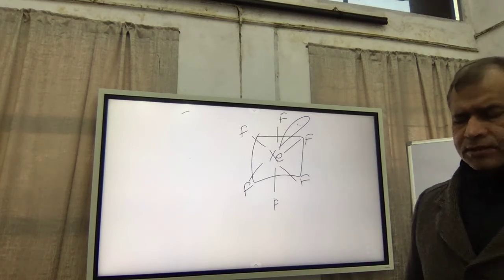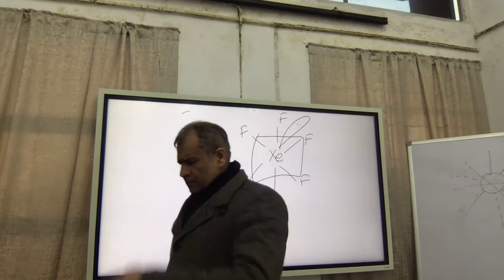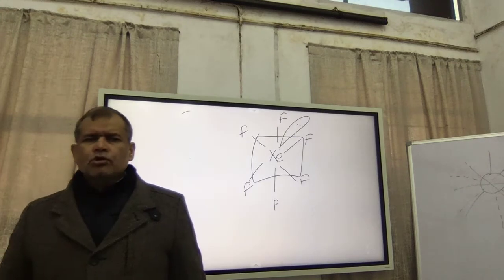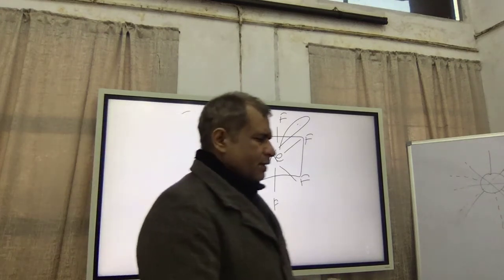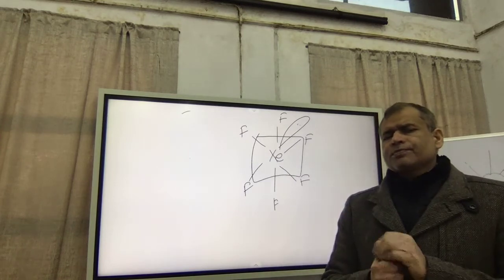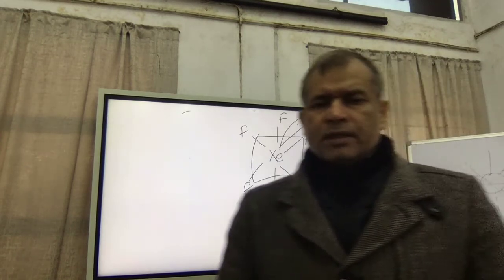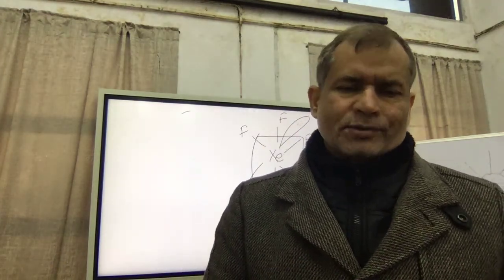If you have any doubt, you can ask me in the discussion forum. So this was all you are supposed to know about the valence bond treatment and shape and geometry of some simple molecules. So with this I ended it and the next time we will be talking about the molecular orbital theory.